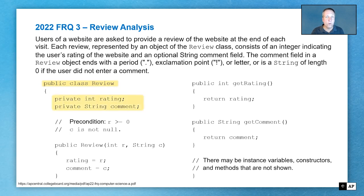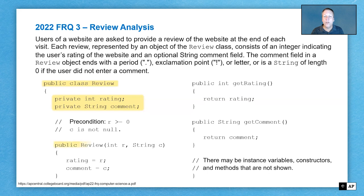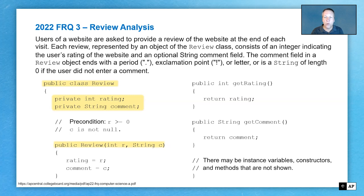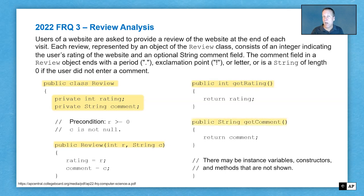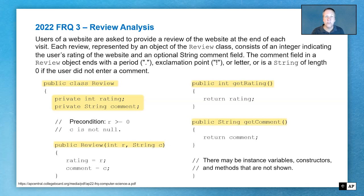We know that these are the two variables: we're going to have an integer for our rating and a string for our comment. In this class, there's a constructor where we're initializing our instance variables. And there are two important methods that we're going to use for the Review class: there's a getRating method, which returns the integer value of the rating, and a getComment method, which returns the string value that represents the comment. Those are the two methods that we really care about — the getrating and getComment method.